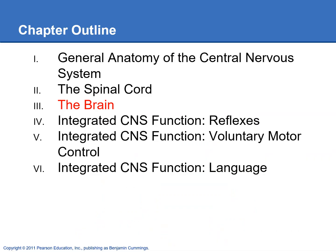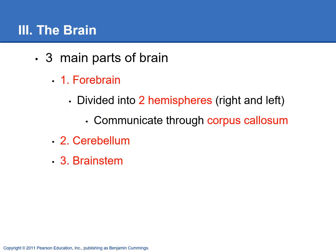We're going to take a look at some brain anatomy in this lecture. The brain has three main parts: the forebrain, the cerebellum, and the brainstem. Let's just take a look at a picture.